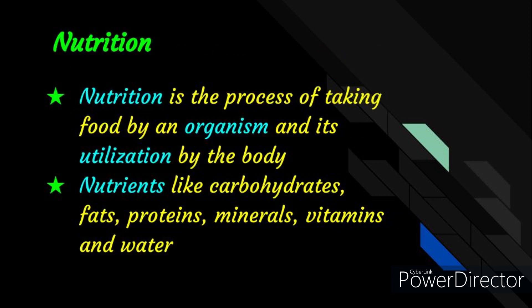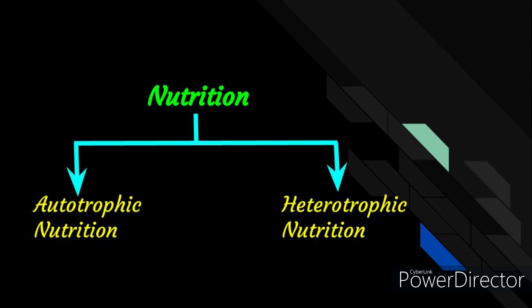Food is the essential source of energy for all living organisms. Organisms need food to obtain energy in order to stay alive and perform life processes. Do you know what is nutrition? The process of taking in food by an organism and its utilization by the body is called nutrition. The two modes of nutrition based on the ways organisms obtain food are autotrophic nutrition and heterotrophic nutrition.